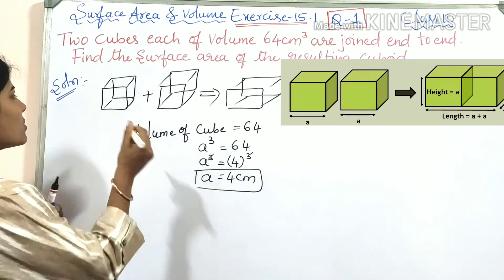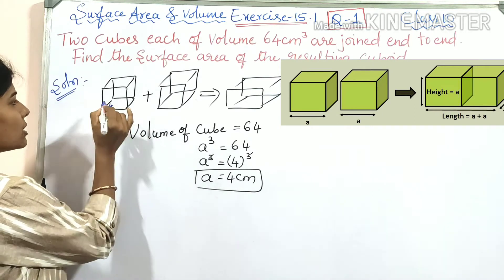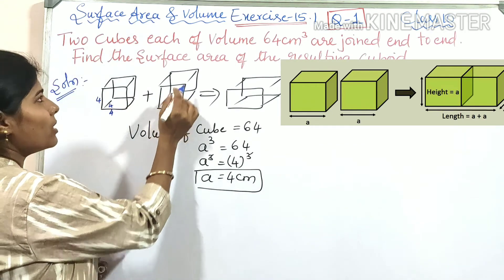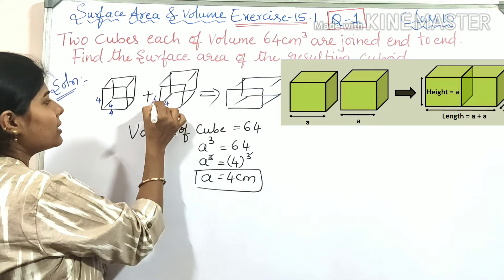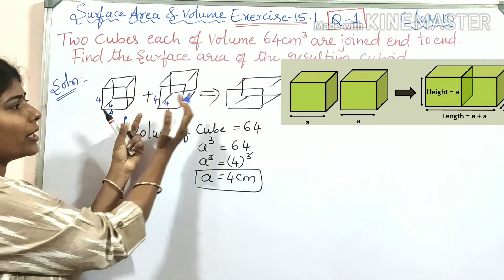So here, the length is 4 centimeter, breadth is 4 centimeter, height is 4 centimeter. With the same volume, the second cube also has length, breadth, and height of 4 centimeter. Now they are joined end-to-end to form a cuboid.